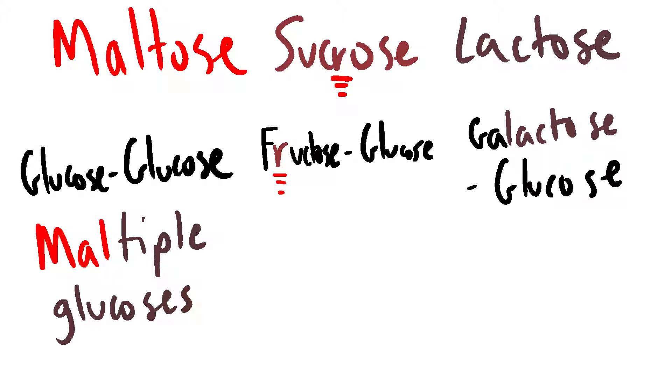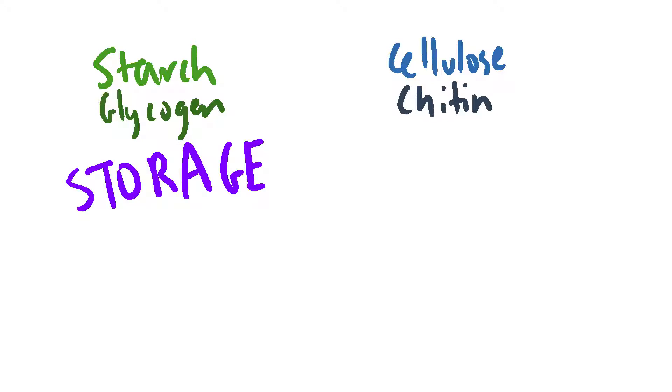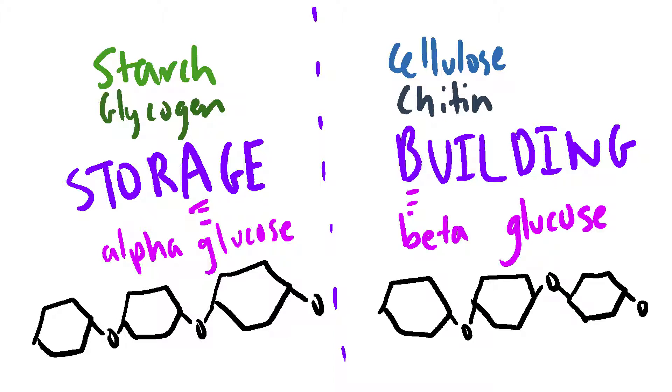Examples of even larger organic compounds include polymers, or chains of glucose molecules. There are four main types: starch, glycogen, cellulose, and chitin. Starch and glycogen are used for storage, while cellulose and chitin are used for building a structure. Storage has an A in it, so starch and glycogen have alpha bonds, meaning that the glucose is all facing the same way in the chain. Building has a B in it, so cellulose and chitin have beta bonds, meaning that the glucose molecules face in opposite directions.